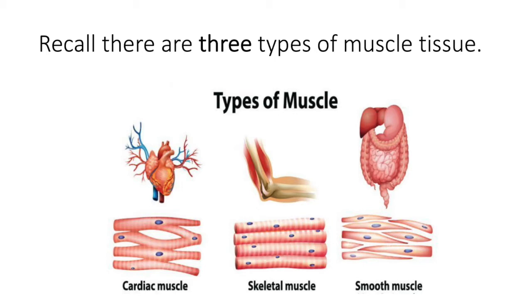Smooth muscle tissue is very different from the other two types of muscle tissue — it is not striated. Those cells are uninucleated, and we describe this shape as fusiform. Smooth muscle is not voluntary; it's controlled by the autonomic nervous system and surrounds hollow organs. When smooth muscle tissue contracts, it pushes some sort of substance through it. If it's surrounding the urinary bladder, it will push urine through it. If it's a blood vessel, it will push blood through it. If it's the uterus, it would push a fetus through it.